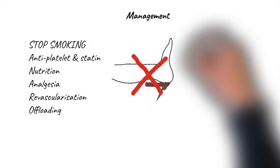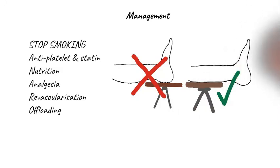For general management of CLTI, all patients should be told to stop smoking. An antiplatelet and a statin should be prescribed unless contraindicated. If they have tissue loss, nutritional supplementation may be needed. Adequate pain relief is essential. If they are a candidate for revascularization, this needs to be arranged promptly. For some patients, particularly those with a neuro-ischemic ulcer, offloading of the area may be important to minimize further pressure and foot swelling.